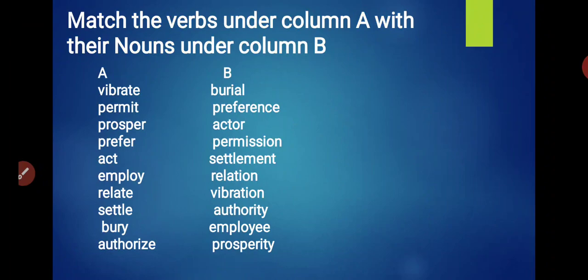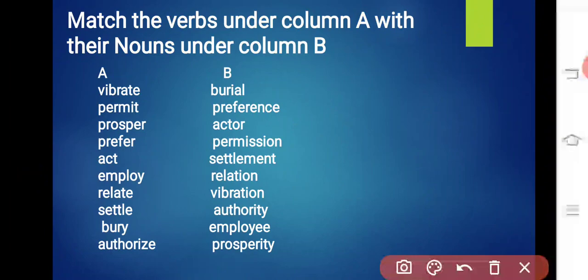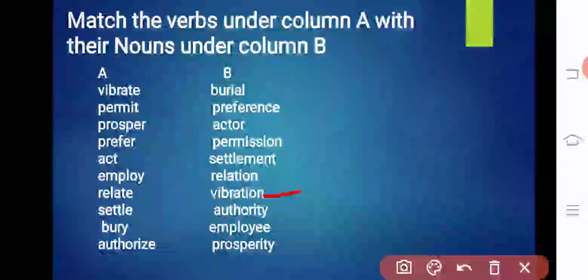Next, let's do this exercise. This is very interesting. There are words in column A and column B. We will match the verbs in column A with the nouns in column B. The first word is Vibrate. Vibrate is a verb. What will be its noun? Vibration. Yes, vibrate becomes vibration.